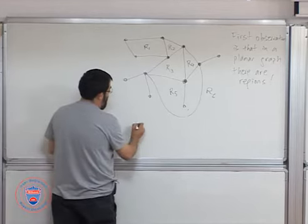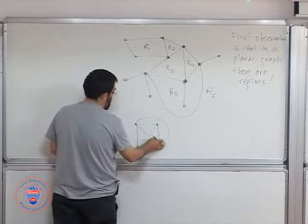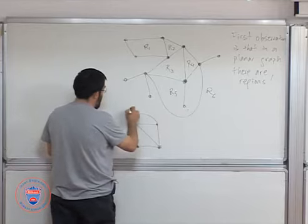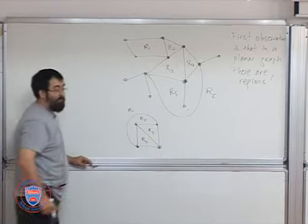If I draw K4, for example, I have region one, region two, region three, region four. So this has four regions.